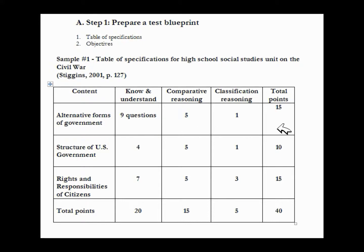For a total of 15 questions, or 15 points, and as you can see, you total the points down the column and across each row. Down here in the corner, we have a total of 40 questions, which we're looking for on that final form of the test.